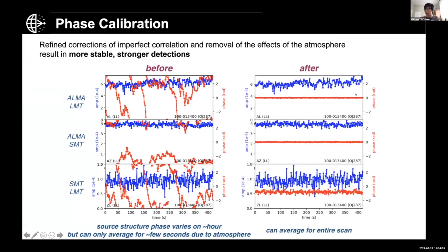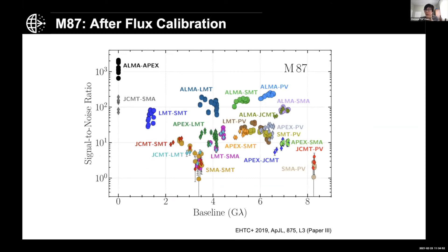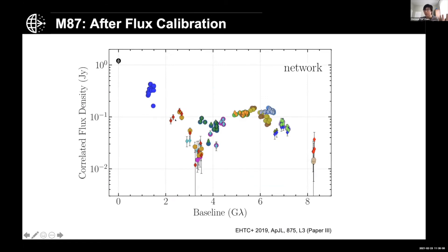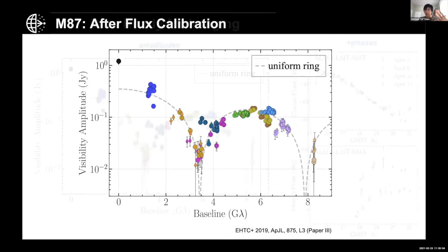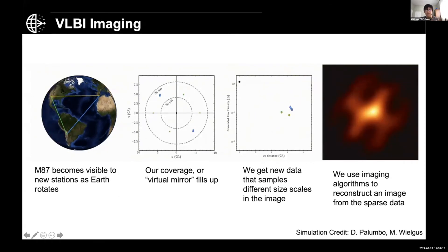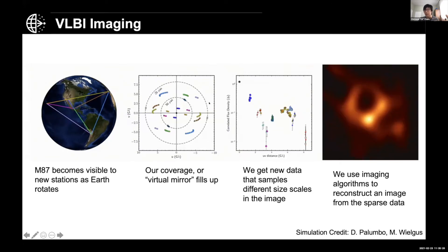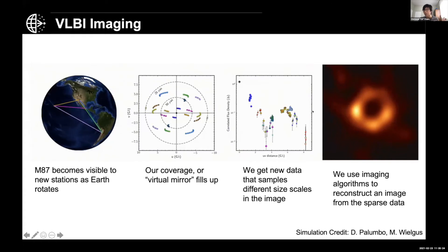If we do not do the calibration, the phases of the data are scattered everywhere. After calibration they line up together and we can average them to reduce noise. A lot of this effect comes from atmospheric turbulence — water vapor and other effects that mess up the phase information. This is a very important calibration step. After calibration the data becomes much cleaner and we can start fitting our model and reconstructing the image.